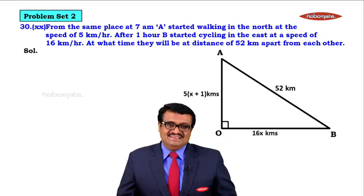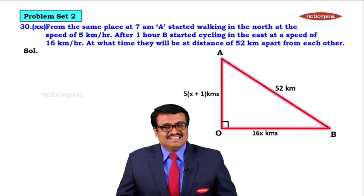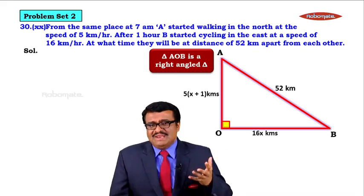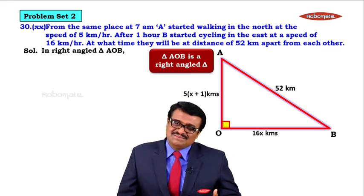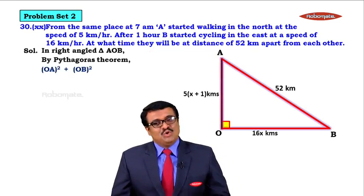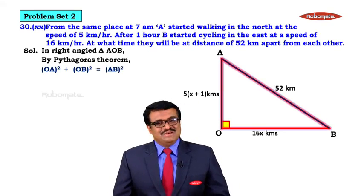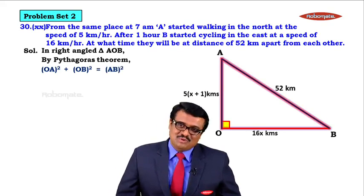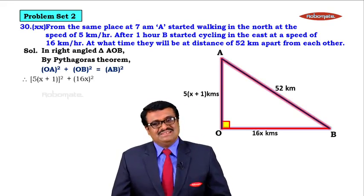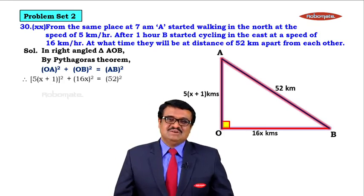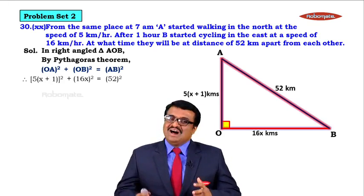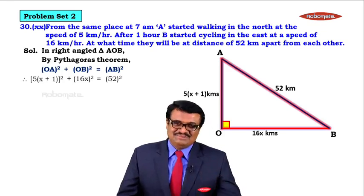Looking at triangle AOB, it is a right-angled triangle, so we can apply Pythagoras theorem: OA² + OB² = AB². Substituting the values: [5(X+1)]² + [16X]² = 52². We have formed the equation and will solve it in the next module. Thank you.